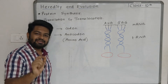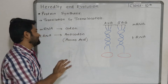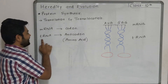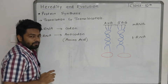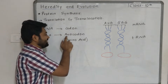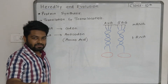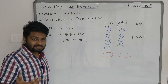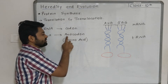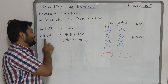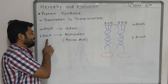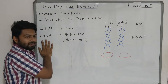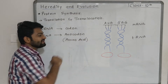Each codon has the information for a specific amino acid. So the mRNA molecule has codons, whereas the other RNA molecule — the tRNA molecule — has anticodons. The word anticodon means opposite: the sequence complementary to the codon sequence. This anticodon is present on tRNA, and tRNA is responsible for bringing amino acids.